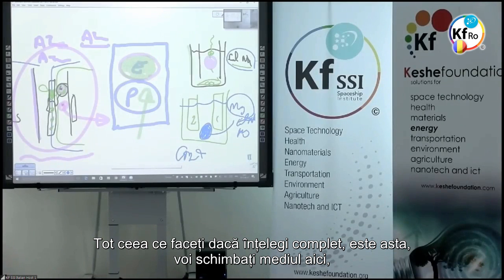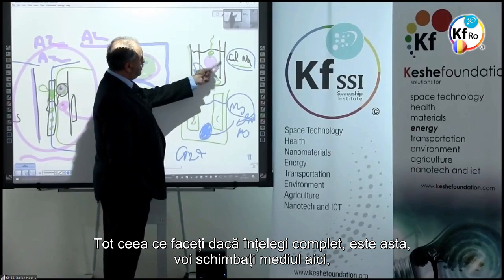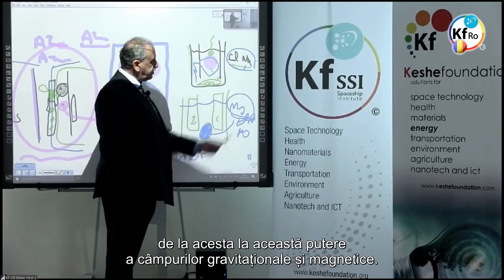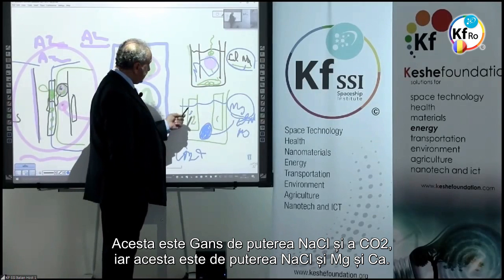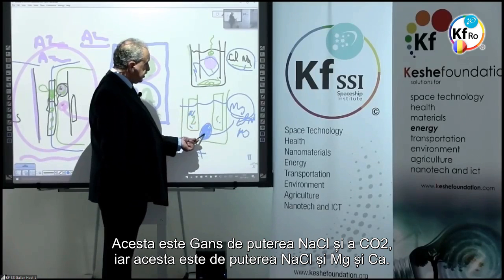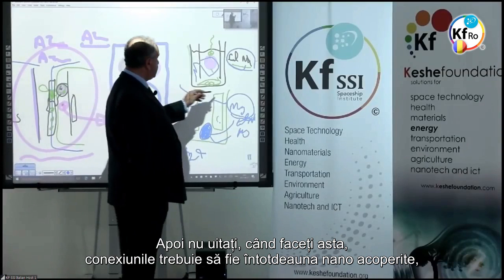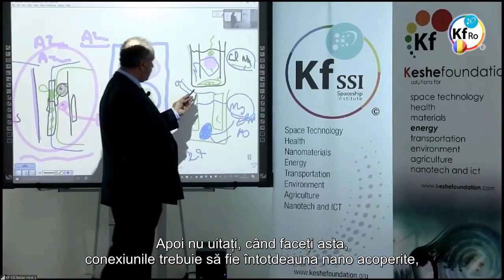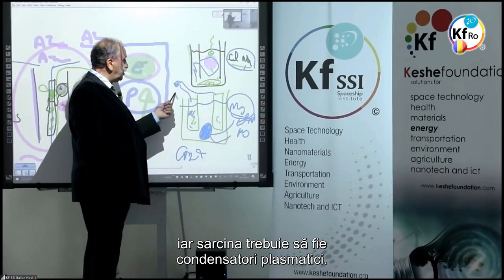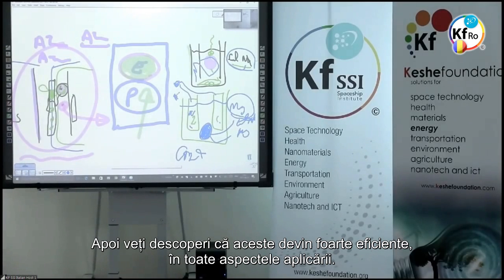All you are doing, if you understand in full, is this: you are changing the environment here, from that to this strength of gravitational magnetic field. This is the sodium chloride GANS CO2 strength. This is sodium chloride plus magnesium and calcium. And when you make these, your connections have to be always nano-coated, and your load has to be plasma capacitors. You cannot go into the matter state as you started with. You find out these become very effective in every aspect of the application.